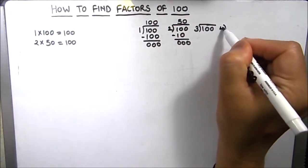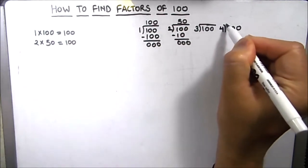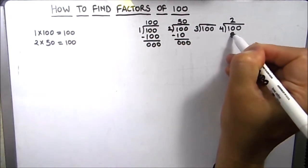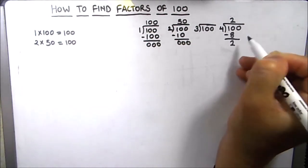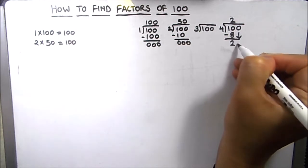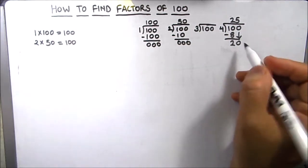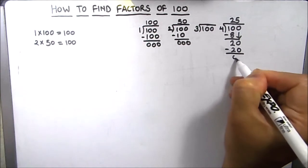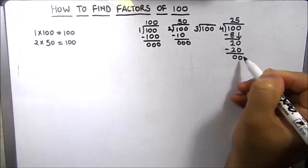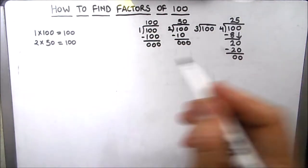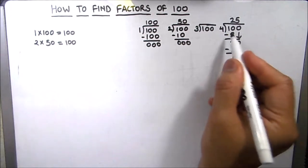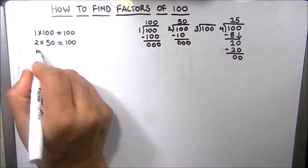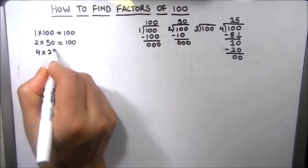Next we will divide 100 by 4. 4 times 2 is 8, we got 2 as remainder. Then we drop down 0 and 4 times 5 is 20, so we got 0 remainder. That means 4 is a factor of 100. We got two factors: 4 and 25. So 4 times 25 is 100.